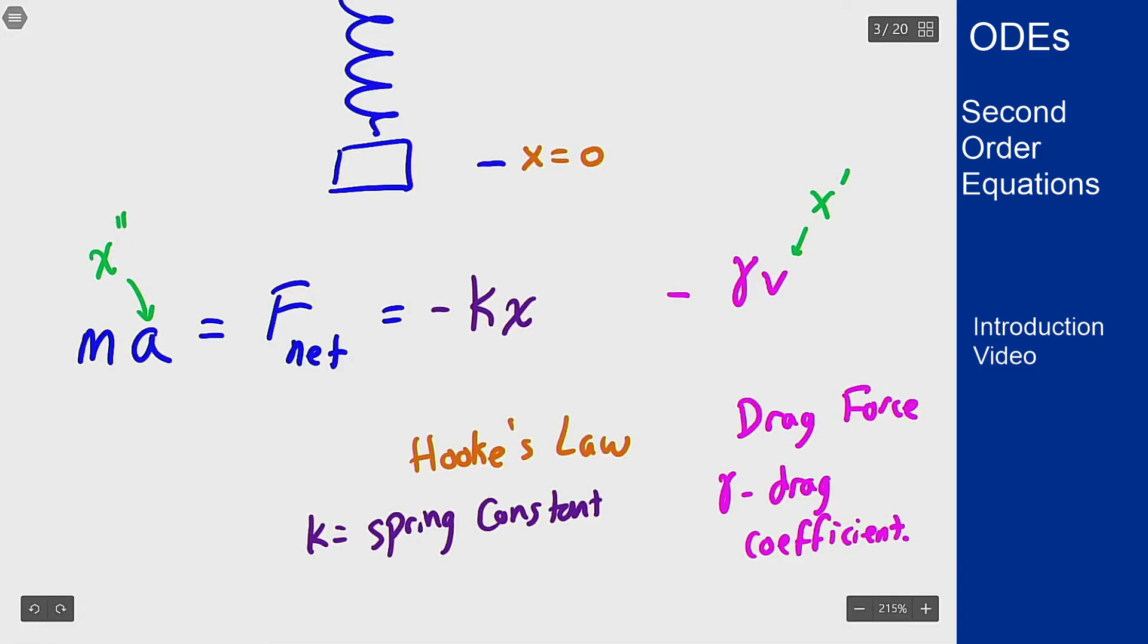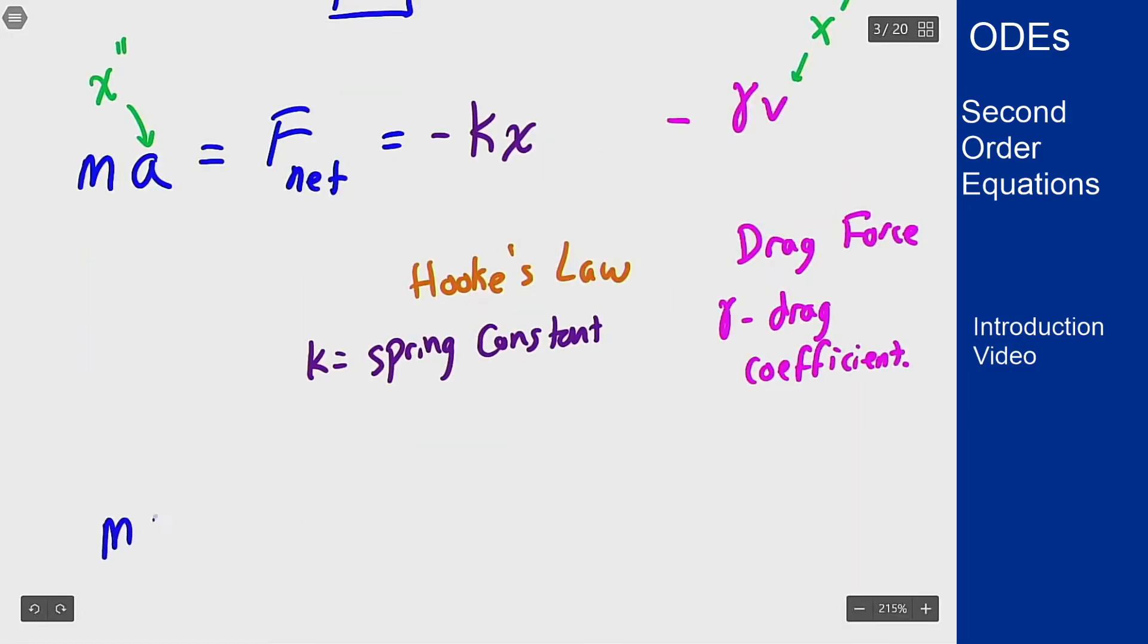So we're really left with something like m times x double prime equals negative kx minus gamma times x prime. That is a second order differential equation.